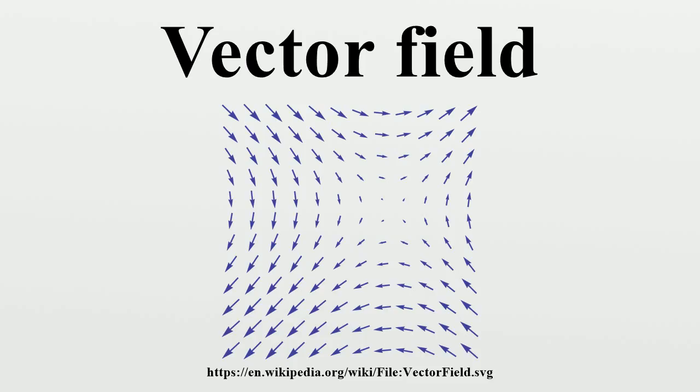Given a vector field V defined on S, one defines curves γ(t) on S such that for each t in an interval I, dγ/dt = V(γ(t)). By the Picard-Lindelöf theorem, if V is Lipschitz continuous there is a unique C¹ curve γₓ for each point x in S so that γₓ(0) = x.